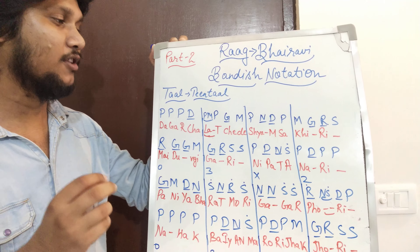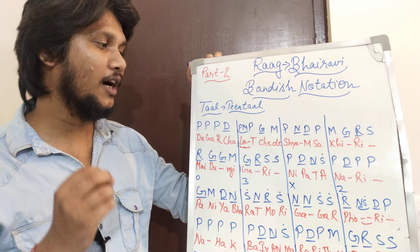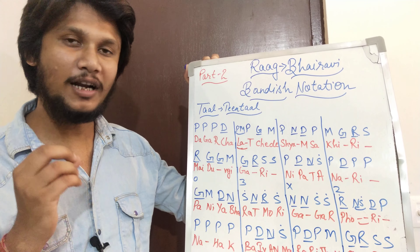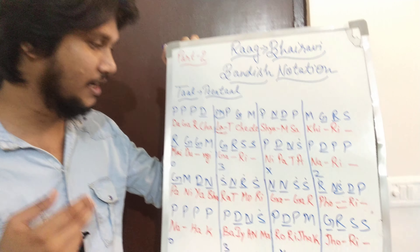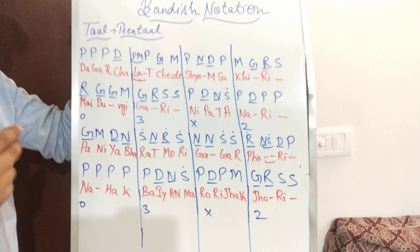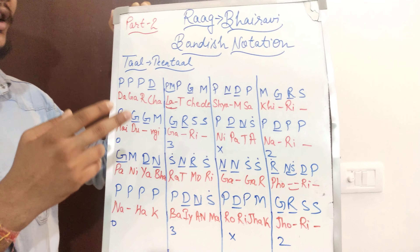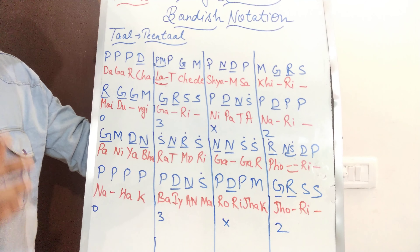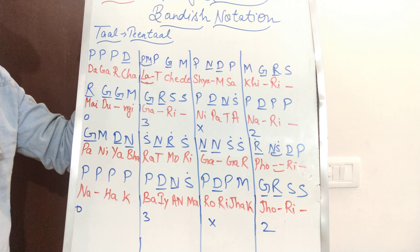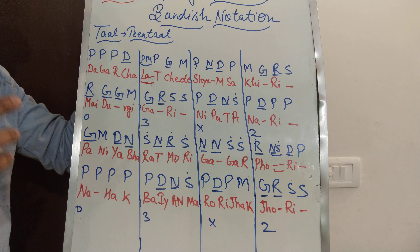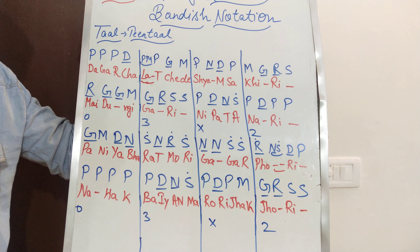Dagar Chalat Chede Shyaam Sakheeri, May Dungi Gaari Nipat Anadi. Now the Antra — Stenja's lines are: Paniya Bharat Mori Gagar Phodi, Nahak Bainya Marodi Jhak Jhori.